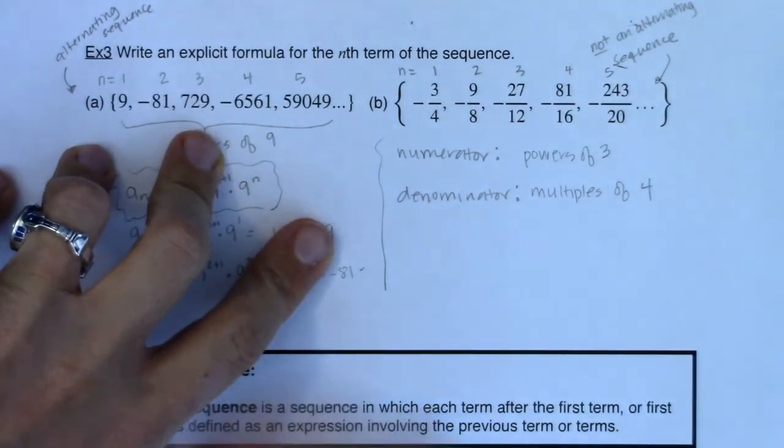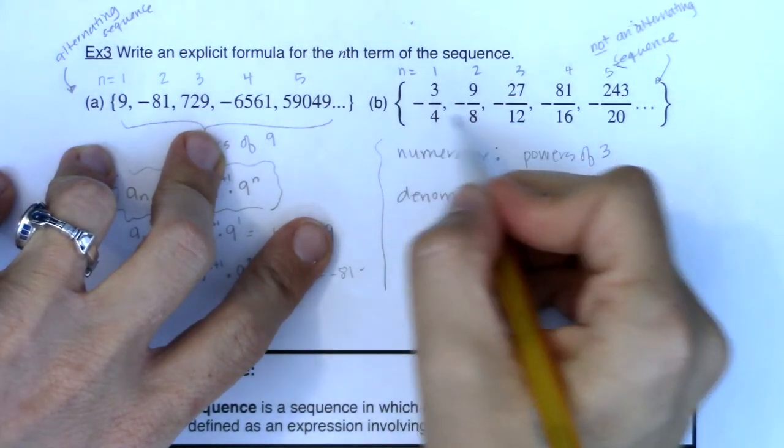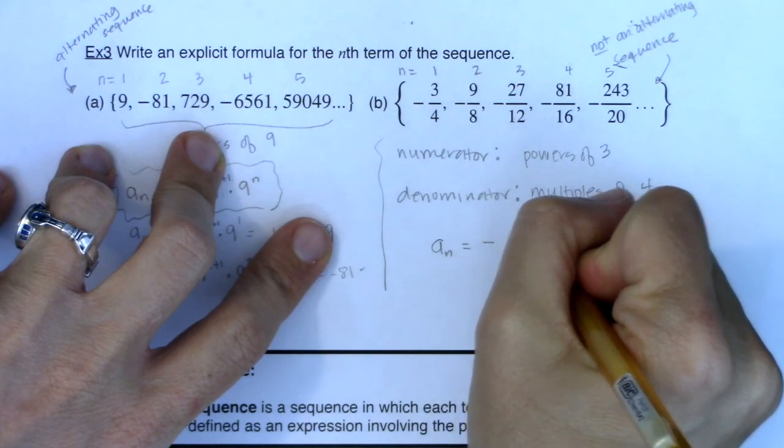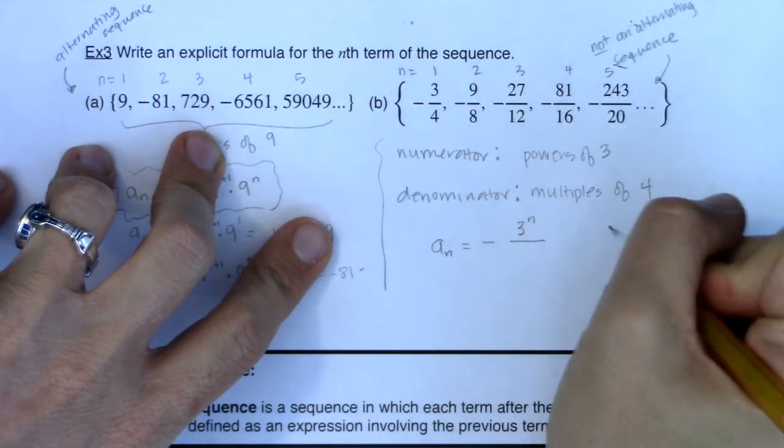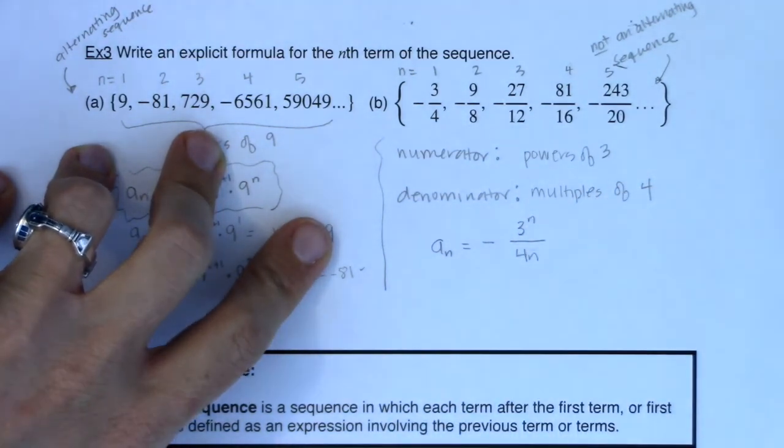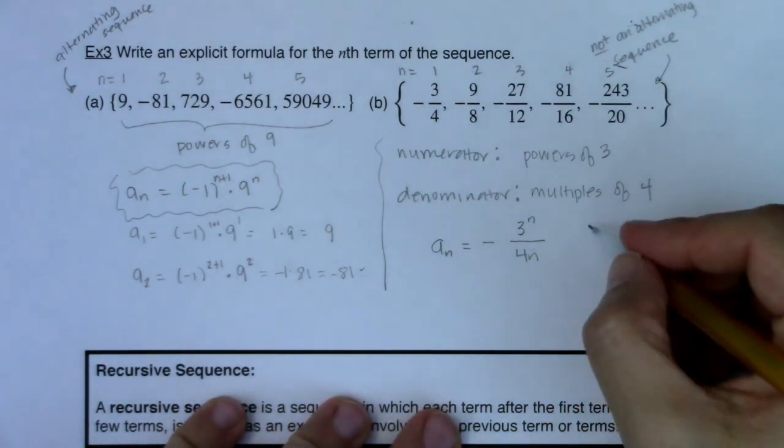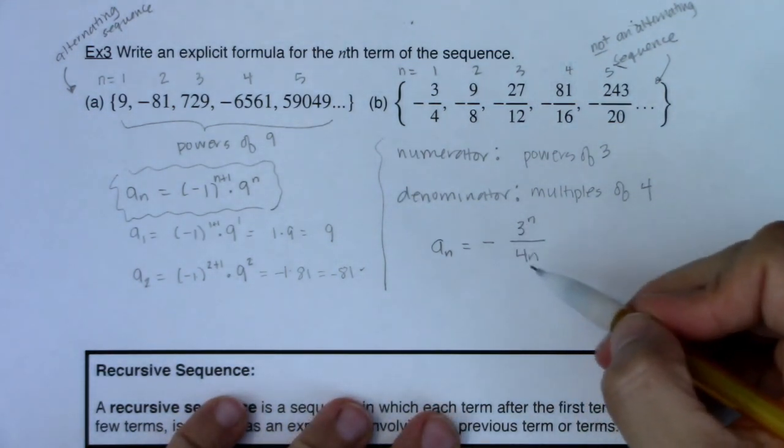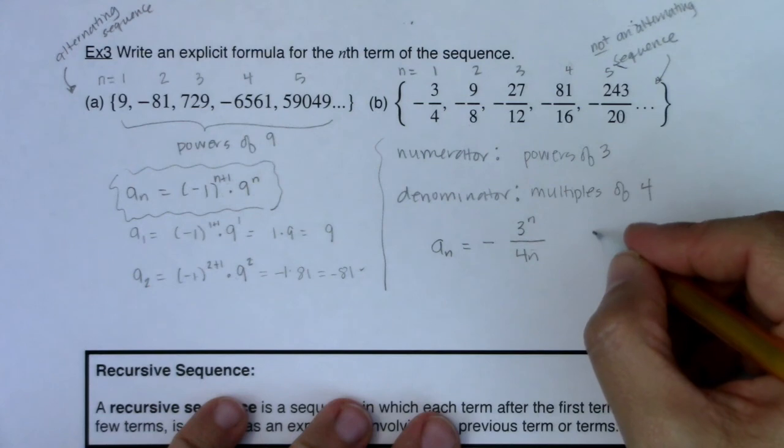So as I start to build my explicit formula, first of all I need a negative out in front because I have negative terms the whole way across. If I want powers of 3, that's going to be 3 to the n. If I want multiples of 4, that's 4n. And when you come up with your formula, check a few of these. I can't tell you how many times I'm off by just a little, like maybe I need to tweak this and make this 3 to the n plus 1 or n minus 1. Just check them.